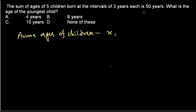One is x, another one is three years interval so x plus 3, another one will be x plus 6, another one will be x plus 9. How many children are there? Five children. So one x, one x plus 3, one x plus 6, one x plus 9, and another will be x plus 12. Let's assume these are the ages of different children.